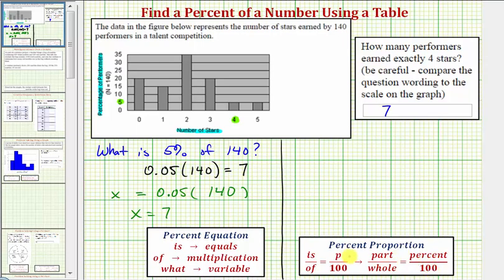Because we're looking for the part of 140 that earned four stars, our first ratio would be the unknown x to 140, which must equal the percent compared to 100. Since we have five percent, it would be five to 100.